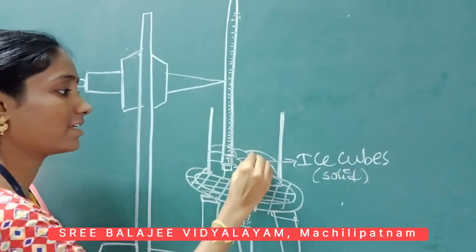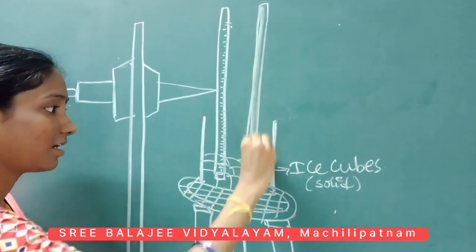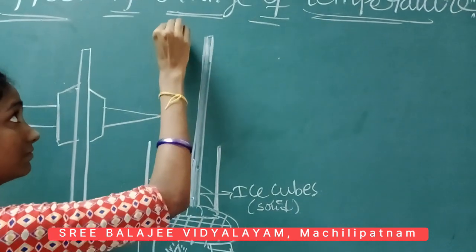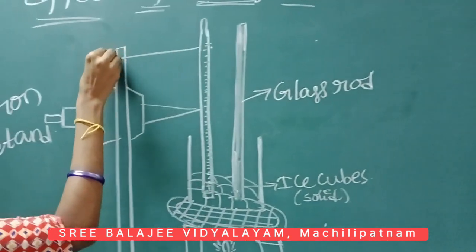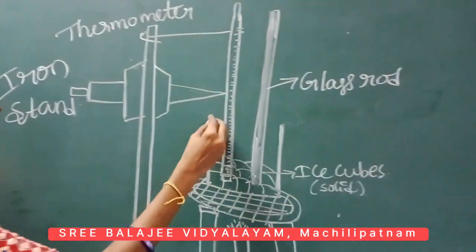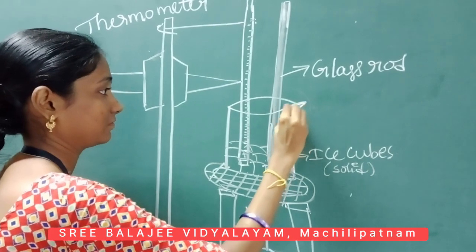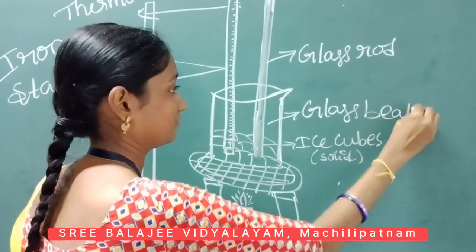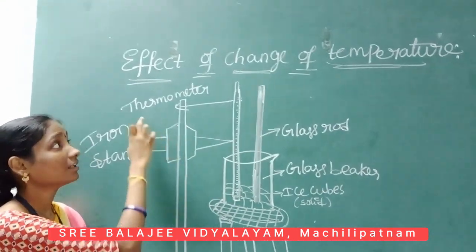In this glass beaker we arrange a glass rod. With the help of the glass rod we stir the ice cubes. Inside the glass beaker we have taken ice cubes and inserted two materials — a thermometer and a glass rod.